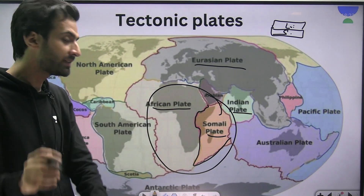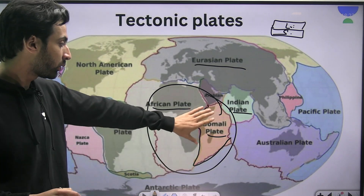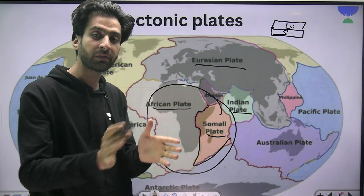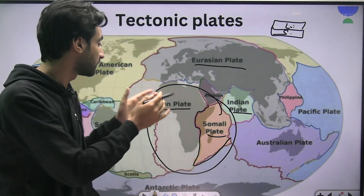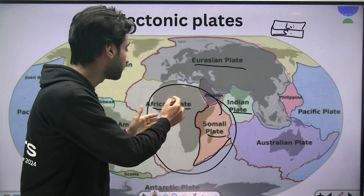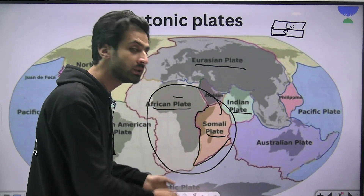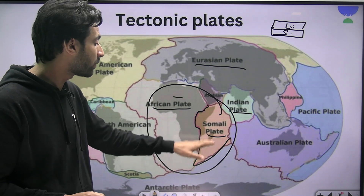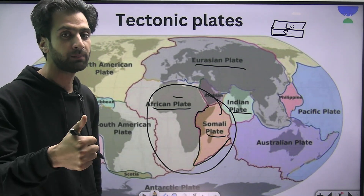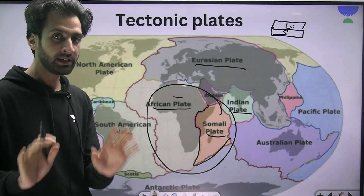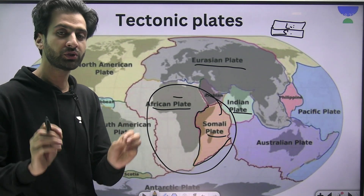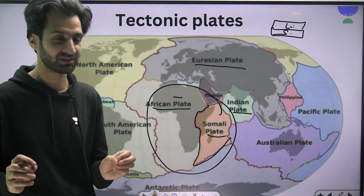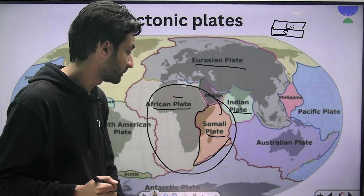Remember that the African continent comprises two plates: the African plate and the Somali plate. The majority of Africa is covered by the African plate, and only the eastern part of Africa comprises the Somali plate. If you have any questions, you can ask in the comment section — I'll be highly obliged to answer.